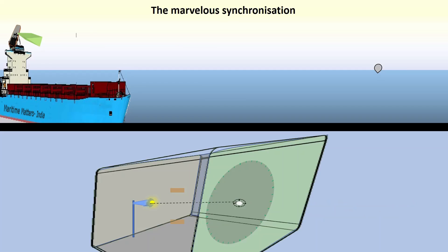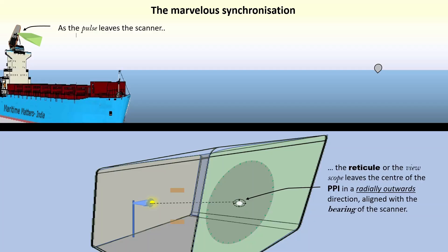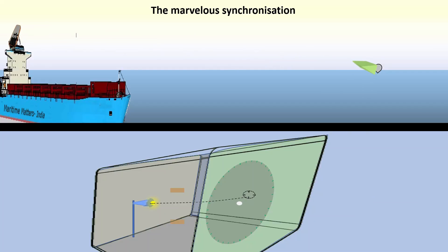Now a marvelous synchronization takes place in the activities of the scanner and the PPI. As the pulse leaves the scanner, the reticule or the viewscope leaves the center of the PPI in a radially outwards direction, aligned with the bearing of the scanner.